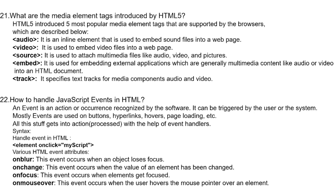Question 22: How to handle JavaScript events in HTML? An event is an action or occurrence recognized by the software, and it can be triggered by the user or the system. Events are mostly used on buttons, hyperlinks, hovers, page loading, etc. All this gets processed with the help of event handlers. Various HTML event attributes include: onblur (occurs when an object loses focus), onchange (occurs when the value of an element has been changed), onfocus (occurs when elements get focused), and onmouseover (occurs when the user hovers the mouse pointer over an element). Thank you — if you like our videos, please share them with your friends and subscribe for more.